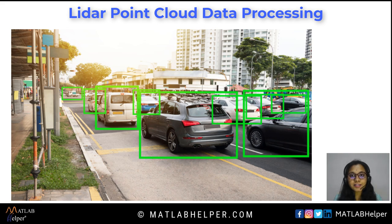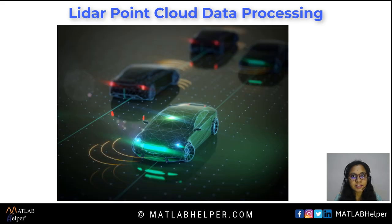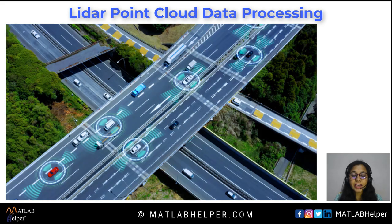If cameras are the eyes of autonomous vehicles, then radars are used to sense the environment. Their interconnection is a complex system consisting of multiple radar sensors and cameras. This complexity can be reduced drastically by implementing a single LIDAR sensor, and the overall system efficiency can be increased by combining all these technologies for our safety.